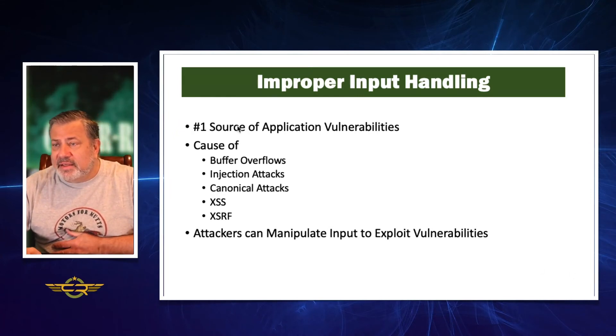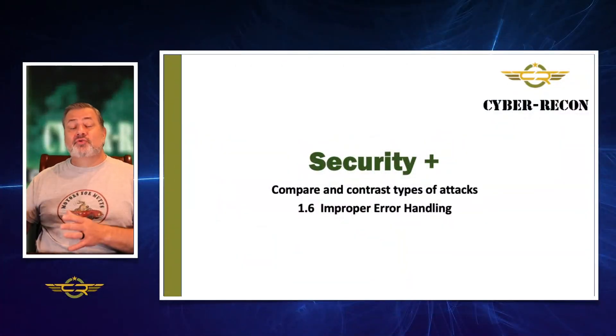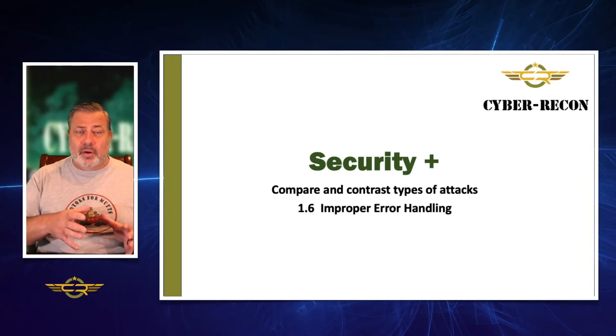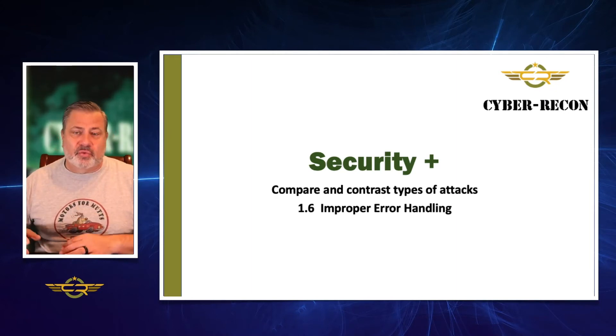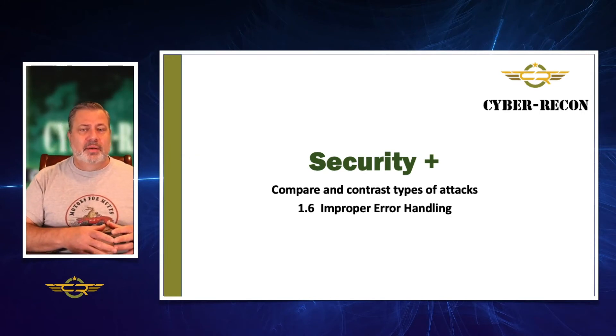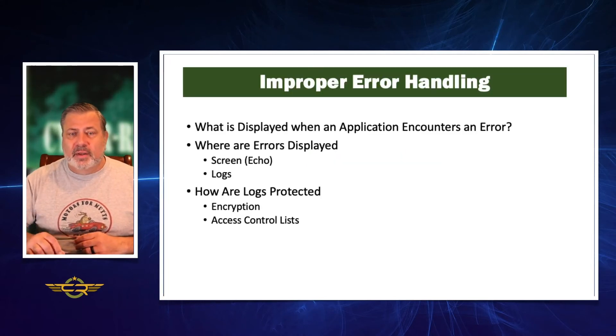That's our first stop — and really, that's programming 101, basic code hygiene. The next thing to talk about is error handling: what happens if something goes wrong with your application or website while it's running? This is also part of Domain 1, area 1.6, and it's called improper error handling.